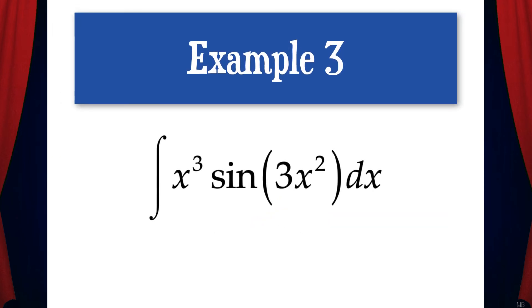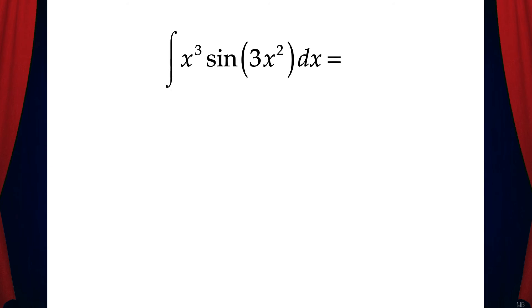Okay, let's do one more example. The integral of x cubed times sine of 3x squared dx. If we follow the steps of our new u substitution method, we get this. u equals 3x squared, the inner function. du dx equals 6x and dx equals du over 6x. All looks good so far.